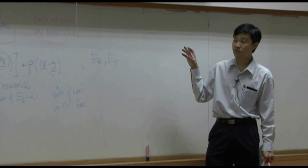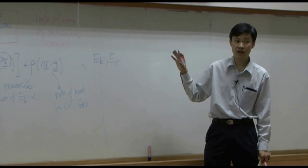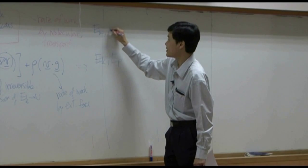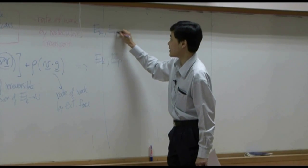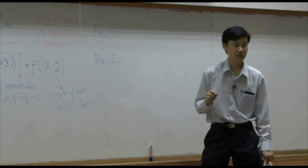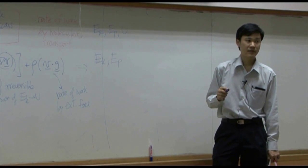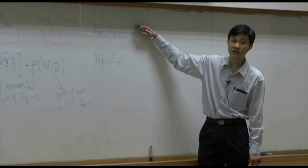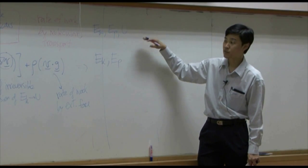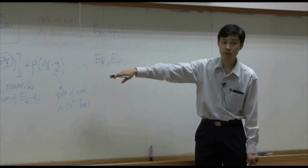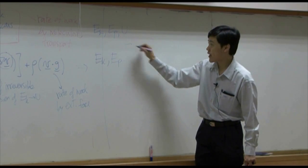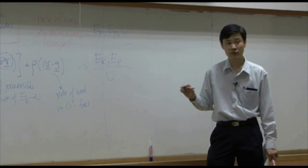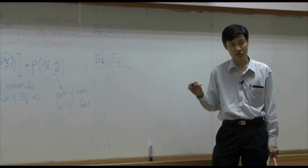Whereas the equation we derived earlier has three forms of energy: Ek, Ep, and U. So if you take that equation we first derived and subtract this equation from it, the result will be an equation that gives you internal energy only.